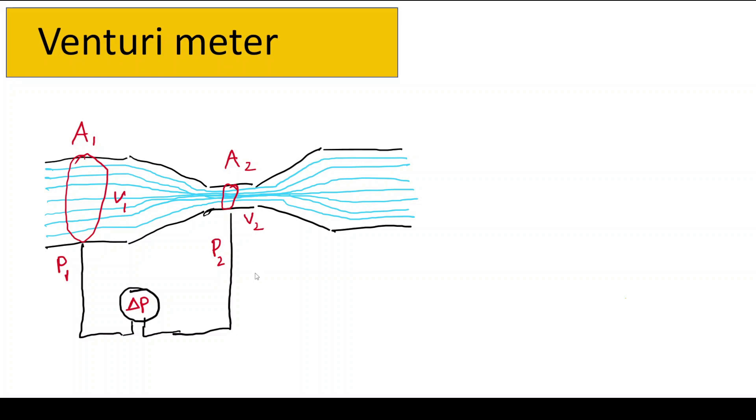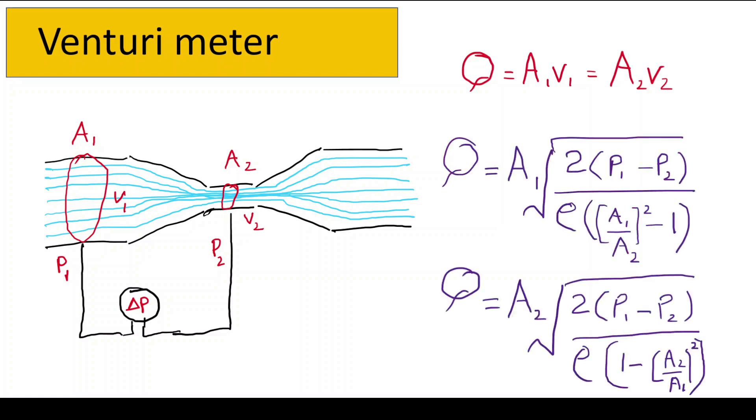Which are derived using the equation of continuity and simultaneously solving this equation with the Bernoulli's equation, then you will have these two final expressions for the flow measuring equations for venturimeter.